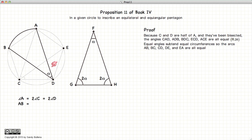Now each angle subtends an equal circumference. So AB will be equal to BC, which will be equal to CD, DE, and EA. So this circle has been equally divided into 5.